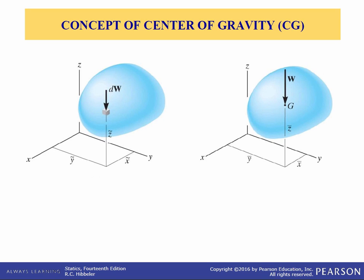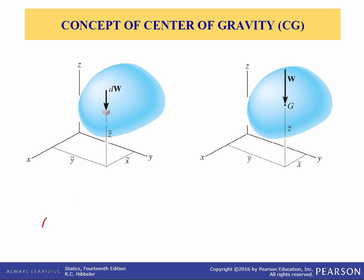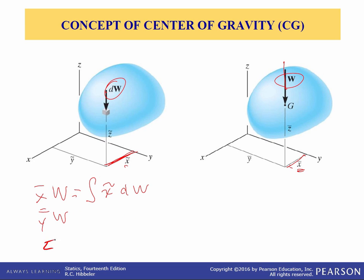The location of the center of gravity measured from the y-axis, which in this case is x-tilde, is determined by equating the moment of the resultant weight times x-bar to the sum of the moments of the weights of all the particles. Mathematically, x-bar times total weight must be equal to the integral of x-tilde times dw. x-tilde is the distance to each individual particle, so x-tilde will change for each particle. Likewise, y-bar times the weight equals the integral of y-tilde dw, and z-bar times the weight equals the integral of z-tilde times dw.